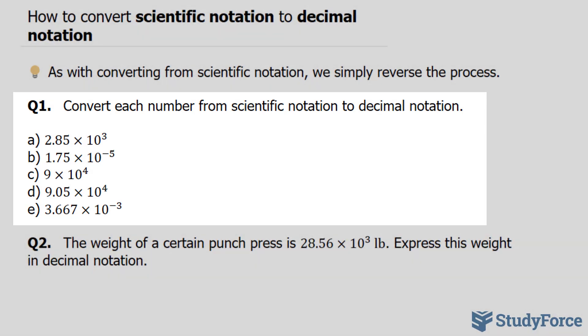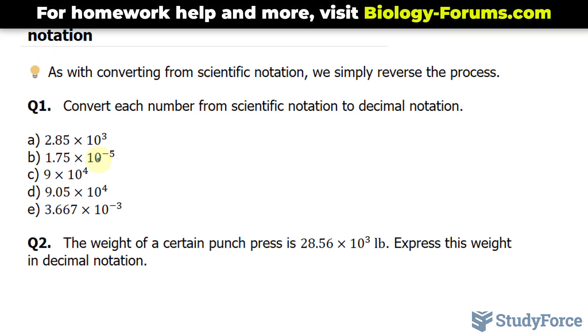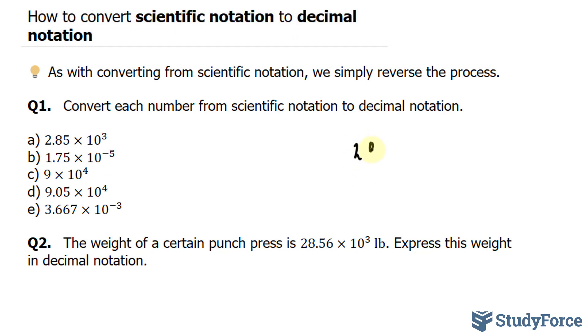Starting with question A, we have 2.85 times 10 to the power of 3. This positive power of 3 suggests that we have to move the decimal place 3 to the right. So for 2.85 we rewrite it as 2850. Now remember with significant figures that this 0 doesn't count as a significant figure. So we still have 3 here and 3 here.